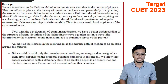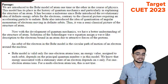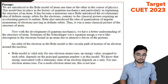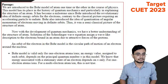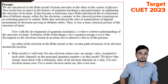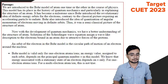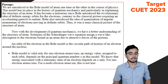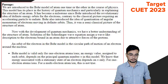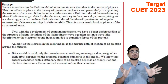The energy value assigned to each orbit depends on the principal quantum number n in this model. We know the energy associated with the stationary state of the electron depends on n only for one-electron atoms or ions. For a multi-electron atom or ion, this is not true.